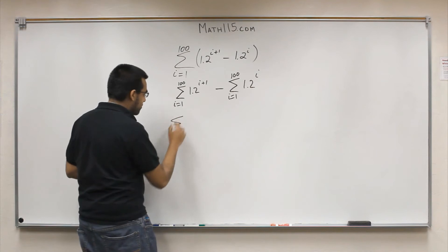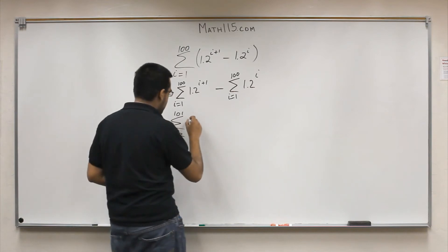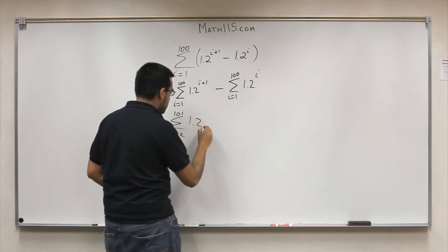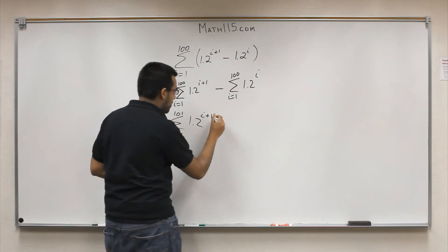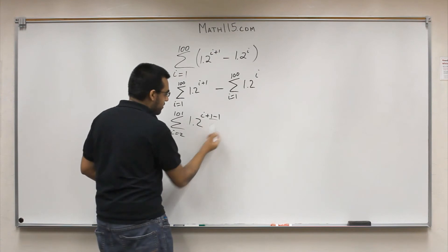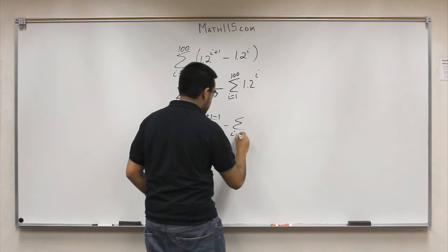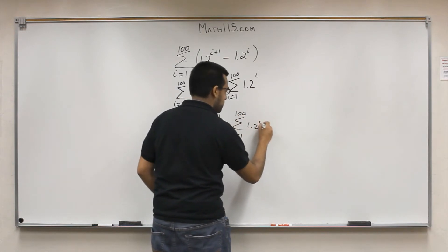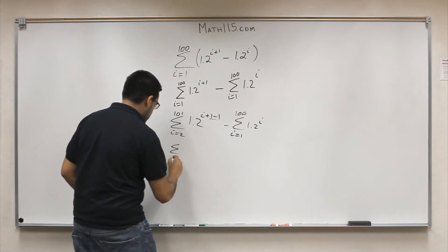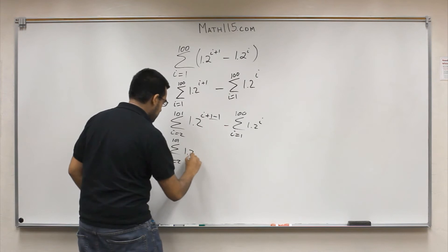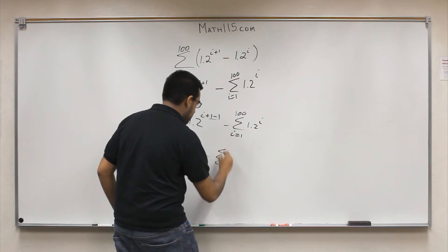So now instead of i equals 1, it's i equals 2 to 101 — we add 1 to both bounds. And since we added 1 to the index, we can subtract 1 from the variable in the exponent. So the first summation becomes: i equals 2 to 101 of 1.2^i. Now you can see where the ones will cancel out. The right side remains the same: i equals 1 to 100 of 1.2^i.